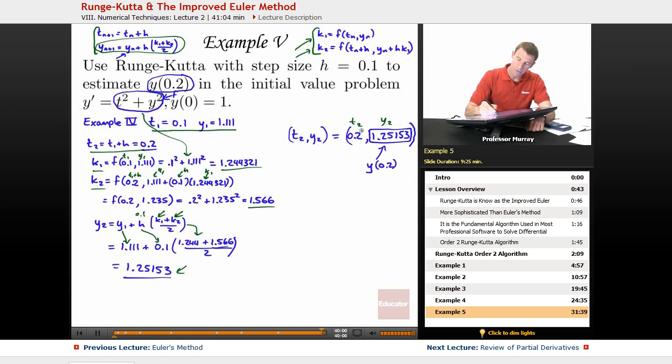Since I've gotten to the value of t that I was asked to find in the prompt, I'm just going to take the y value at that point and offer that as my estimate of y of 0.2. So, my final estimate there is 1.25153.